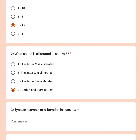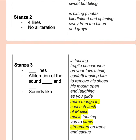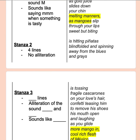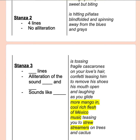Question 3: Type an example of alliteration in stanza 3. Remember, to find an example of alliteration, you're looking for words that start with the same sound that are next to each other in the poem. For example, in stanza 1, melting manners as mangoes slip is an example of alliteration. Can you find one in stanza 3?